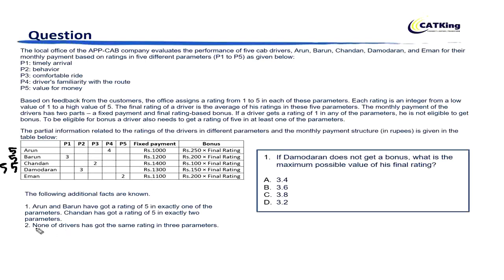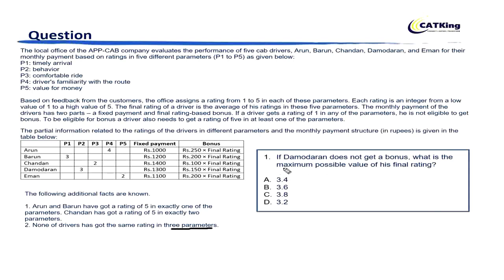The second fact given is that none of the drivers has got the same rating in three parameters. Now looking at question number 1: if Damodaran does not get a bonus, what is the maximum possible value of his final rating?